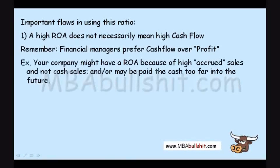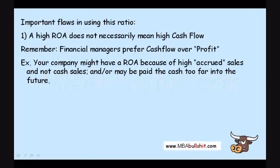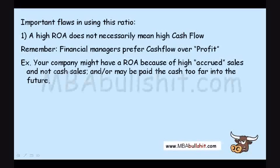For example, your company might have a high ROA because of high accrued sales and not cash sales — the cash may be paid too far into the future. Accrued sales means you make a sale and supposedly earn from it, but you might not get the cash from that sale until much later.